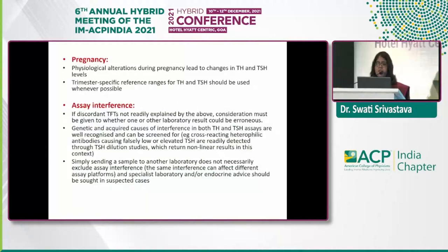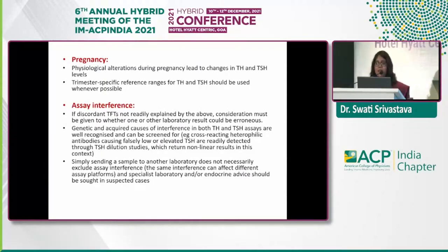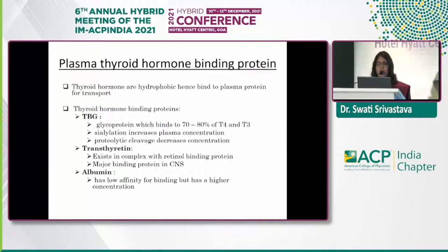In pregnancy, trimester-specific reference ranges should be used whenever possible. Assay interference is very important to keep in mind — if discordant TFTs are not explained by any of the factors mentioned, remember that simply sending the sample to another lab does not guarantee a better result, as different assay platforms can have similar interference. Specialist advice and a specialist laboratory should be consulted.